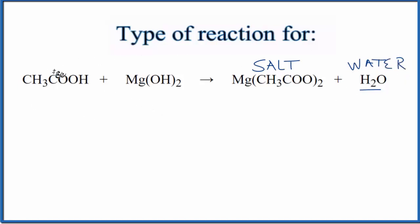If I look at the reactants, acetic acid, this is one you should memorize, that's an acid. And then Mg(OH)2, I have a metal bonded to this OH group, a hydroxide. A metal and a hydroxide, that's a base. So acid plus base gives me salt and water. That's the pattern for a neutralization reaction.